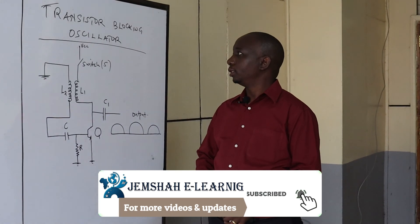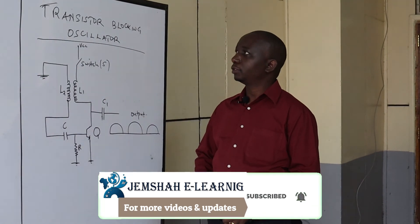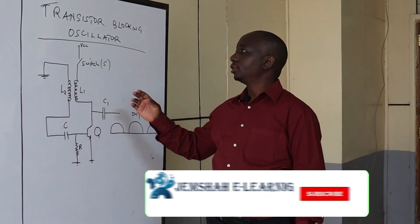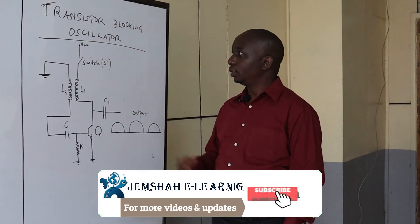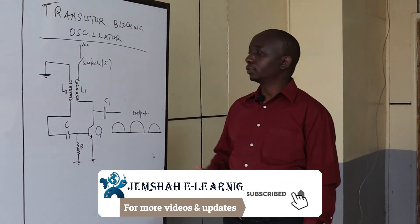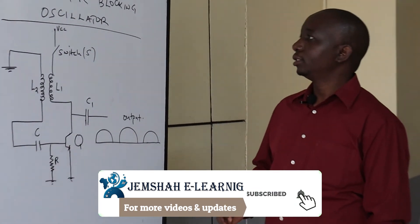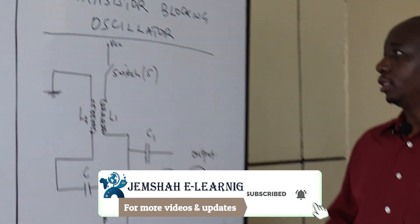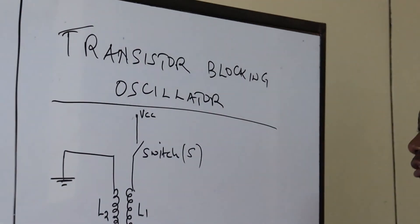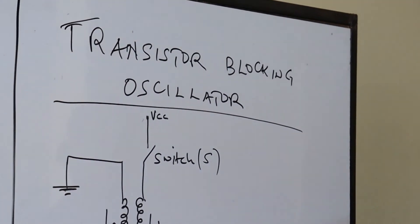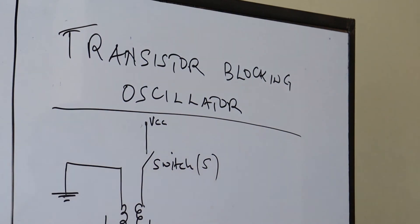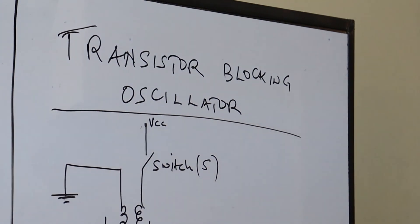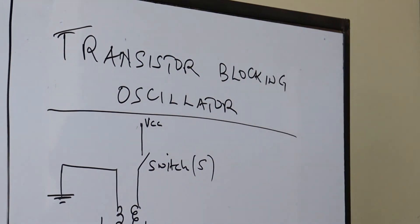We're going to continue with the types of oscillators. From the previous lesson, we were dealing with other types of oscillators which are still sinusoidal. This one is a transistor-blocking oscillator.